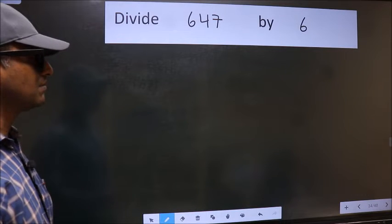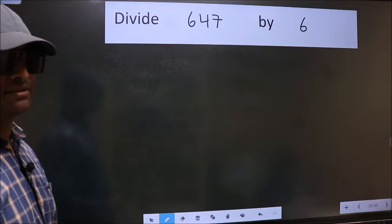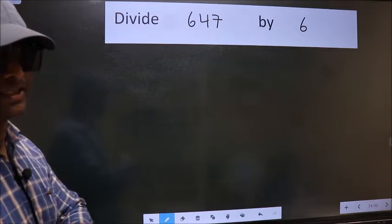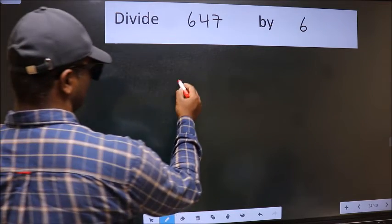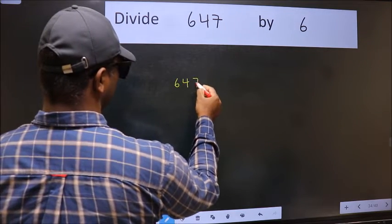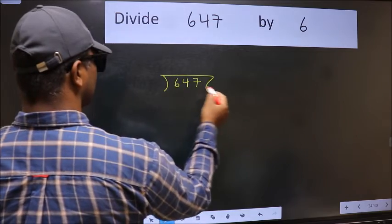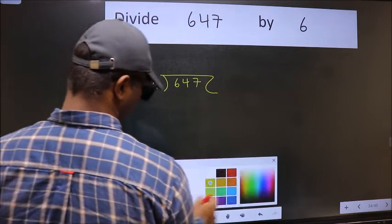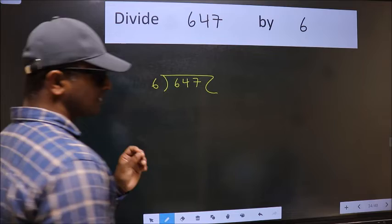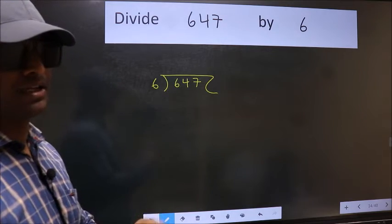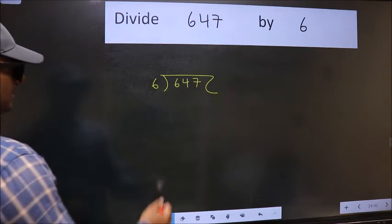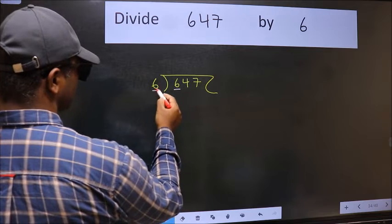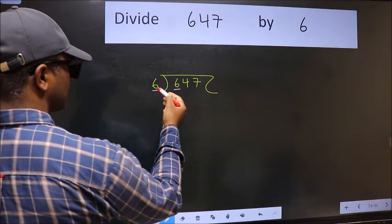Divide 647 by 6. To do this division, we should frame it in this way: 647 here and 6 here. This is step one. Next, we have 6 and 6 here. When do we get 6 in the 6 table?